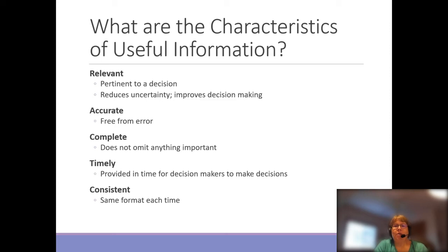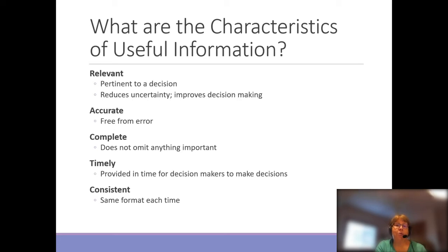To help describe some of these, sometimes it's more useful to talk about information or characteristics or types of data that do not meet that characteristic. So let's say we want to make a decision of which customers we might want to extend more credit to if we're selling on account. One of the reports we would use is an accounts receivable aging report.